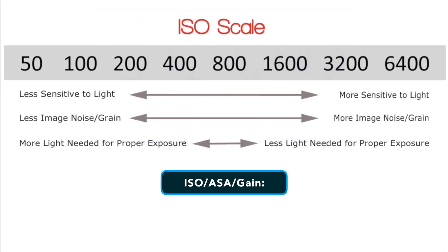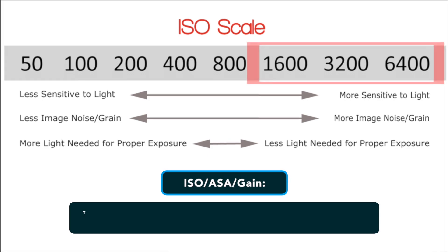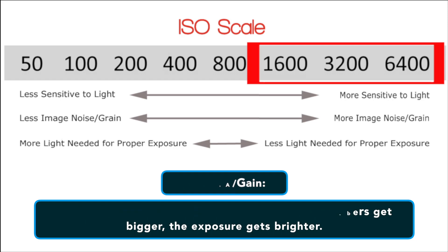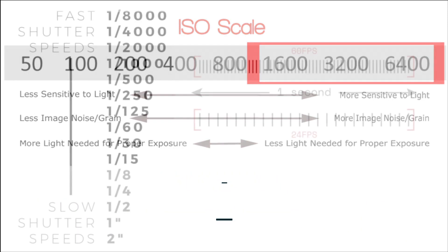ISO, ASA or gain — remember, they all have different names on different cameras but are in fact the same thing. This is the sensitivity of the sensor to light. As numbers get bigger, the exposure gets brighter.